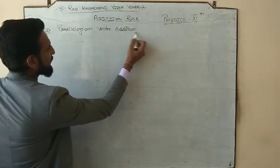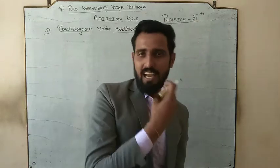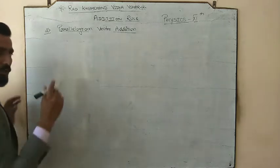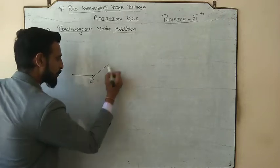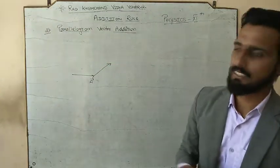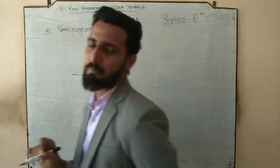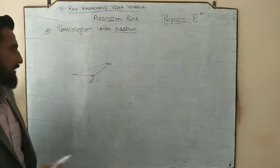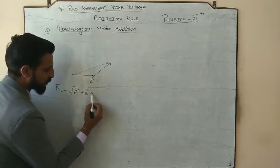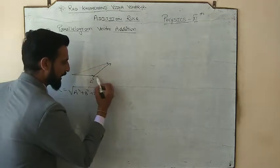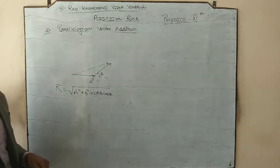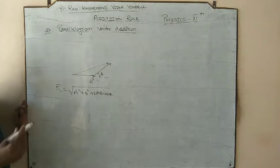So we are going to study today the parallelogram vector addition. Let us quickly revise the triangle law of vector addition. The rule says that if we have two vectors connected such that the head of the first vector is connected with the tail of the second vector, then the resultant of the two vectors is given by the third side of the triangle. The magnitude of the resultant is root over (a² + b² + 2ab cosθ), where θ represents the angle between vector a and vector b, a and b are the magnitudes, and r is the magnitude of the resultant.